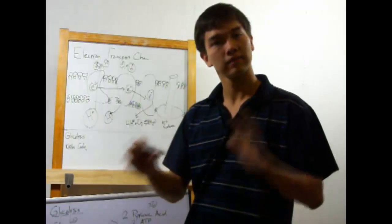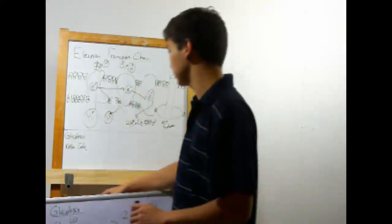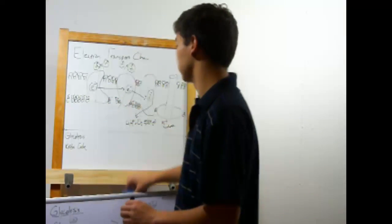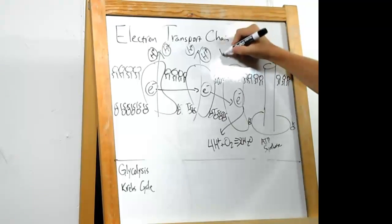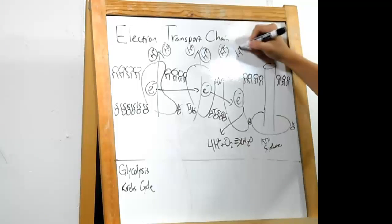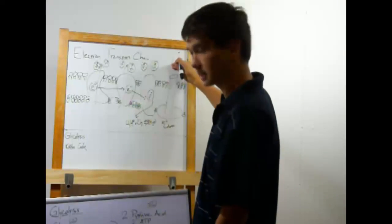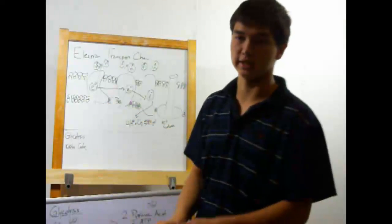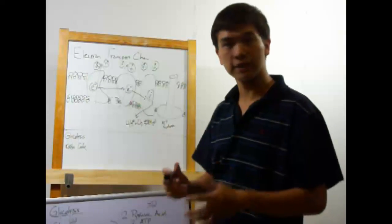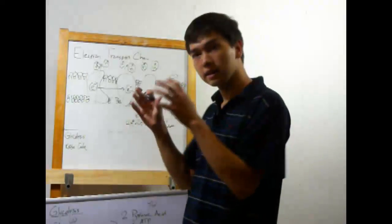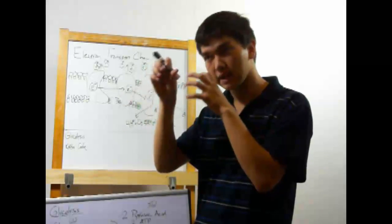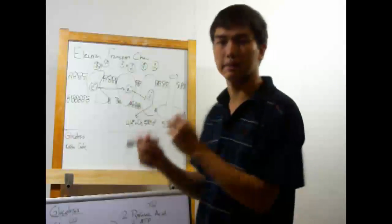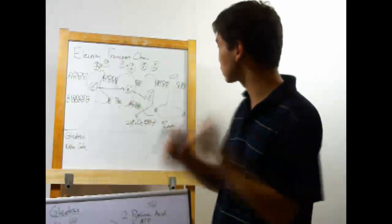But anyway, as the electron transport chain continues, H plus will move from the outside of the membrane to the inside. There will be a very high concentration of H plus ions on this side and a very low concentration here. As you know about diffusion, things want to diffuse across and make the concentrations equal, but they can't because the membrane will not let polar or charged molecules through.